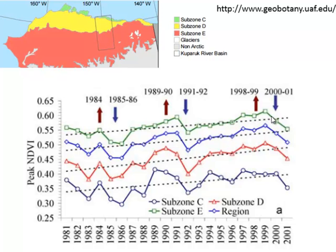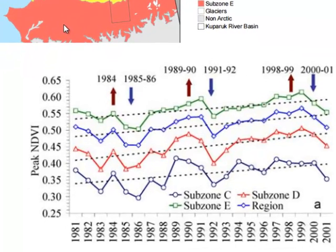If we look at the linear trend in peak summer NDVI, for each subzone the linear trend is increasing NDVI from the 1980s to 2001. So for each of these Arctic subzones we have a greening trend, or increasing peak summer NDVI over time.